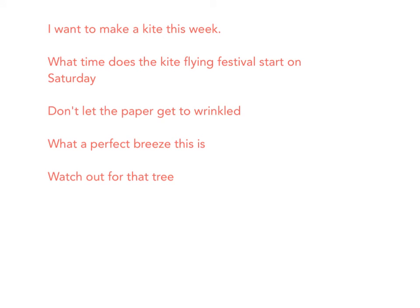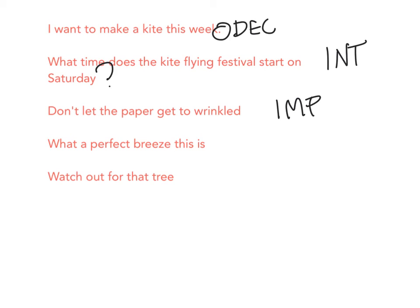Here are some practice sentences. 'I want to make a kite this week.' — This is declarative, so it gets a period. 'What time does the kite flying festival start on Saturday?' — This is interrogative, so it gets a question mark. 'Don't let the paper get too wrinkled.' — This is a command, so it is imperative. It is not a strong enough command for an exclamation point, so it gets a period.